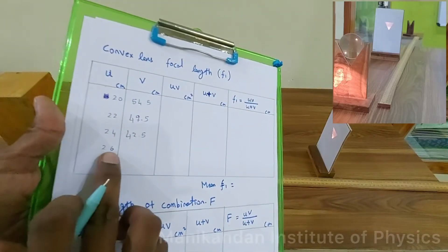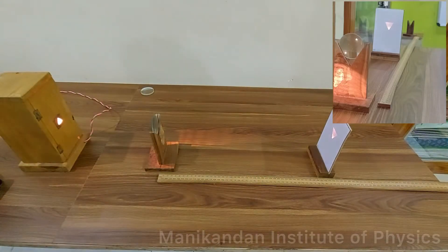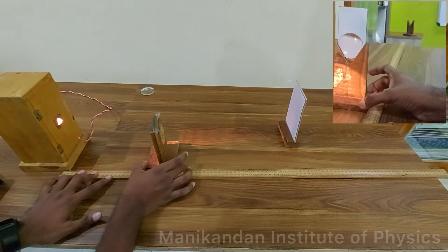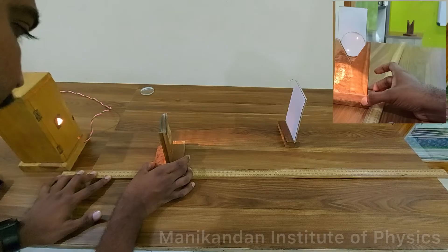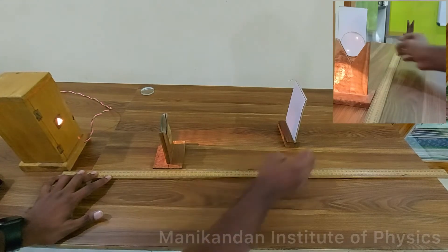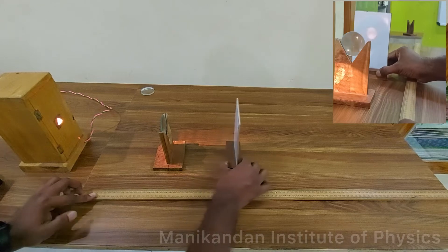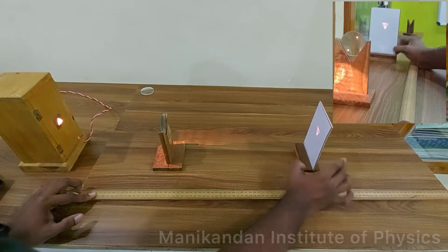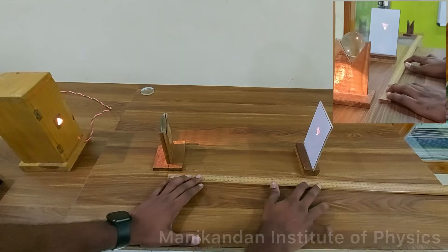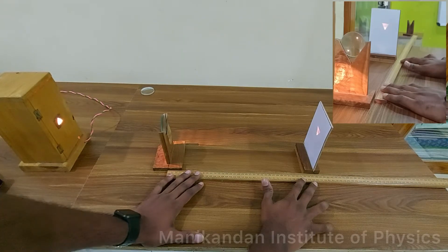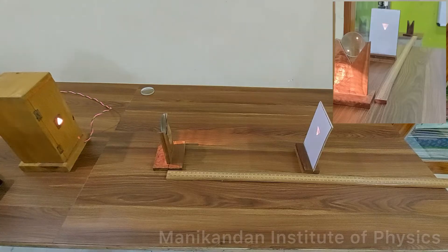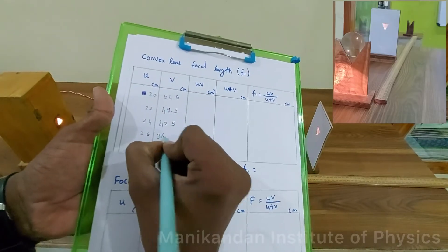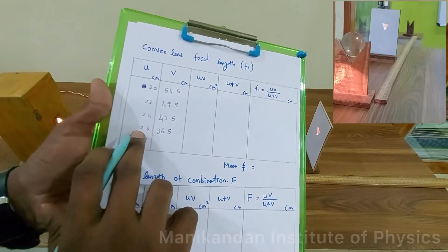Next, my u value is 26 cm. I am fixing this value and moving my screen away from the lens. There is formation of a clear image. The distance from the lens to the screen is 36.5 cm. So for u = 26 cm, v = 36.5 cm.